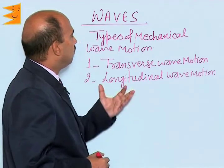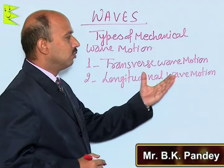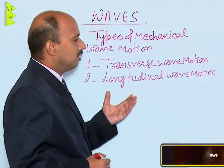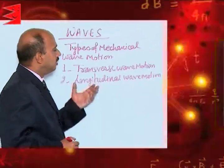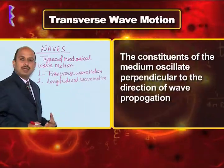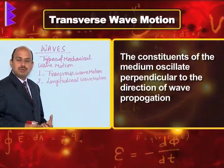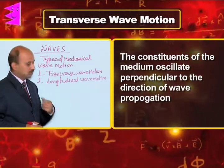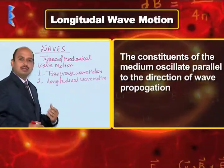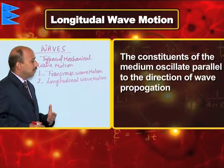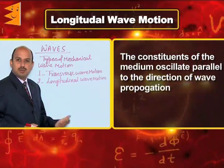There are two types of mechanical wave motion. The first one is transverse wave motion and the second one is longitudinal wave motion. In transverse wave motion, particles of the medium vibrate perpendicular to the direction of propagation of the wave. In longitudinal wave motion, particles of the medium vibrate parallel to the direction of propagation of the wave.